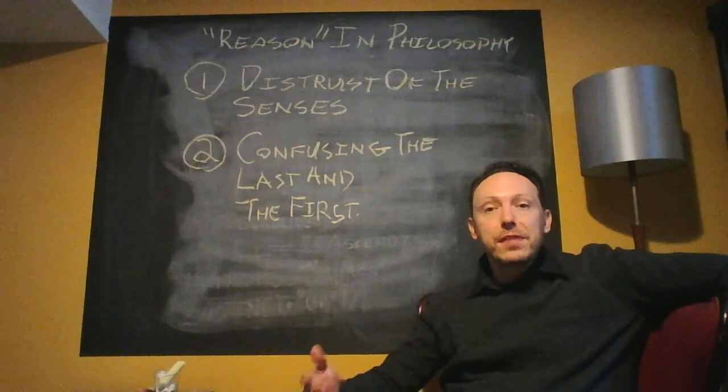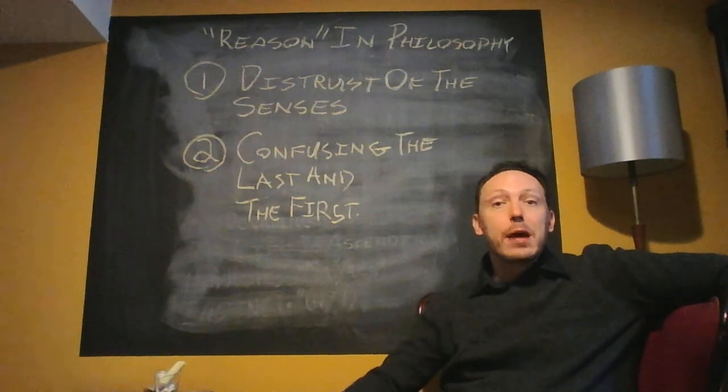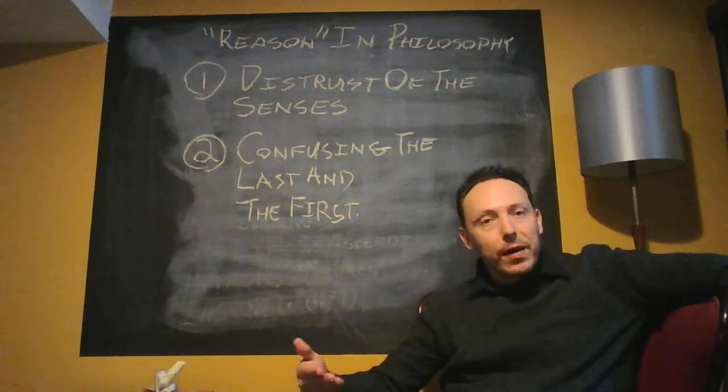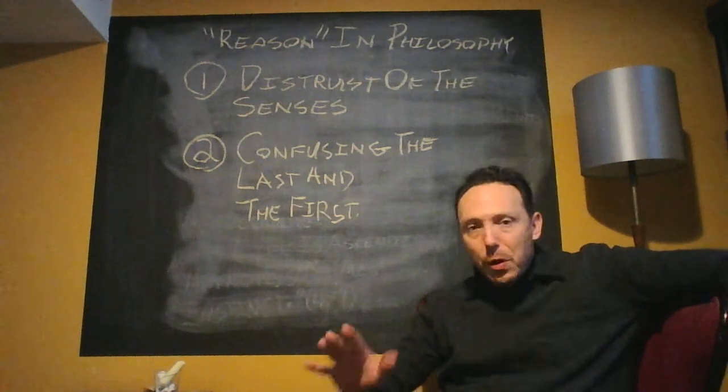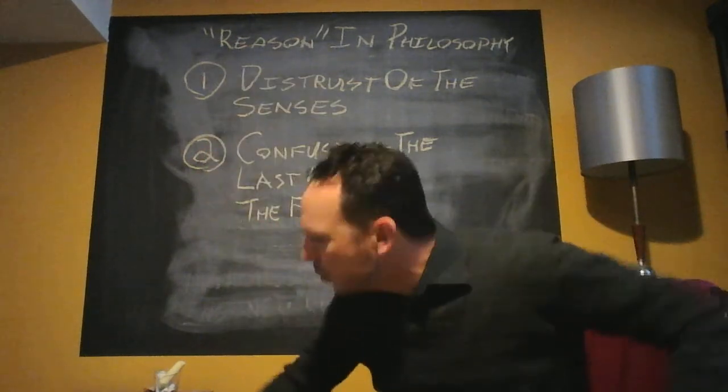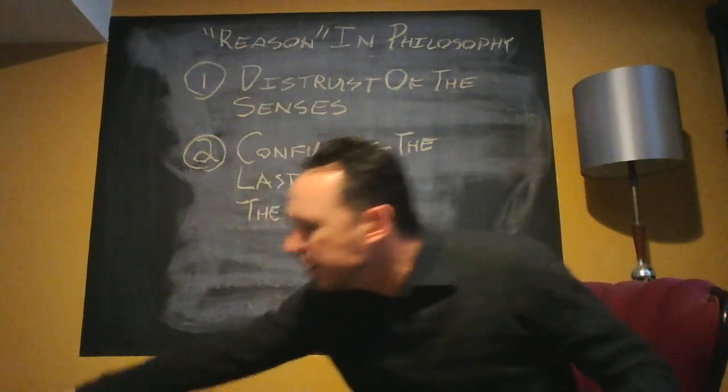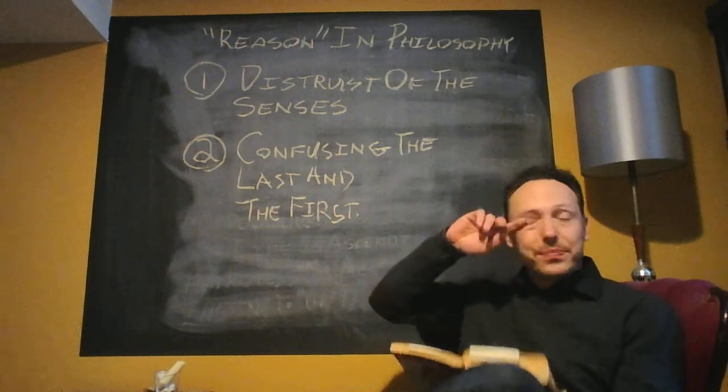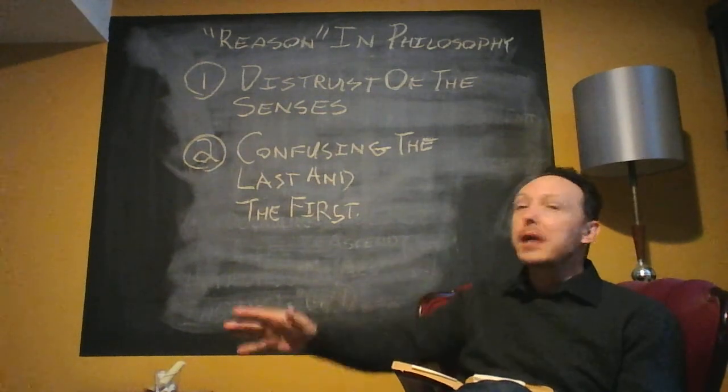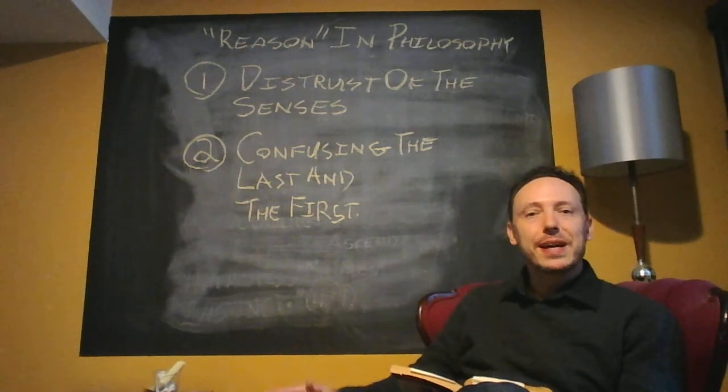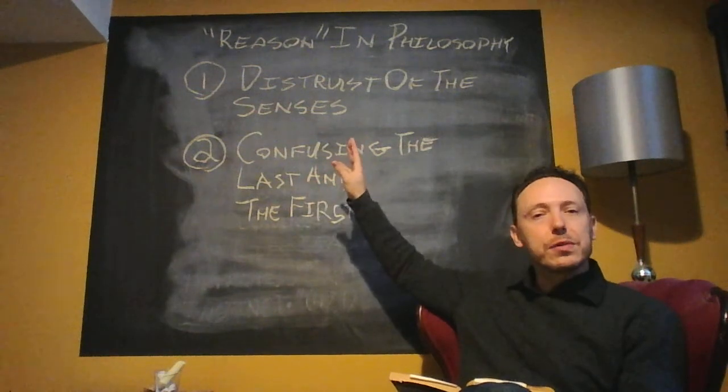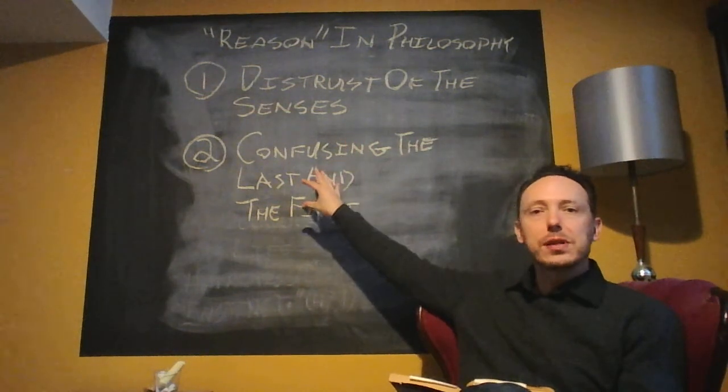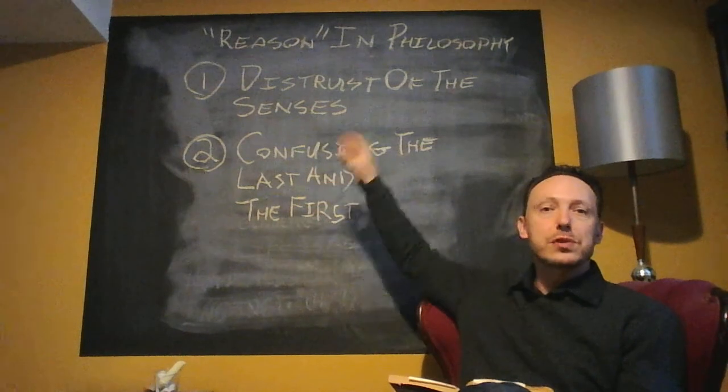Now, effectively what we've done in doing this is we've confused the last and the first. So the most real is that which is bloody well in front of us, and our concepts and abstractions and ideas come limping after to sort of wrap our minds around that which we experience. We have confused, more or less, our epistemology for reality. So what Nietzsche wants to further argue is that this God concept that we have is a symptom of this, well, these two idiosyncrasies. Mostly the second, but these two idiosyncrasies.